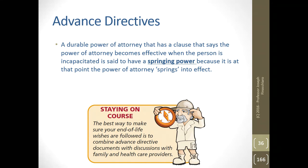I can write a durable power of attorney to someone and they cannot act as my attorney-in-fact unless I become incapacitated. If I am fully cognizant and they enter into a real estate transaction to sell a piece of property behind my back, as long as it has that springing clause, the person will be held privately liable for whatever they did because they had no right to sell property that was not theirs.